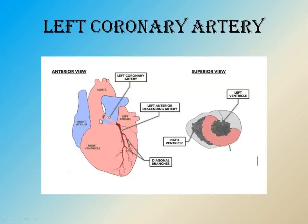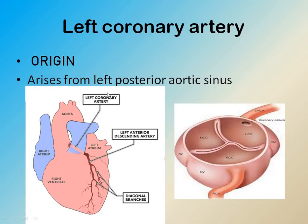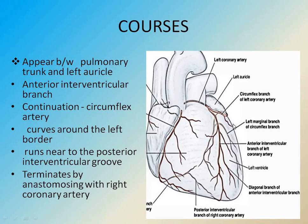The left coronary artery arises from the left posterior aortic sinus. The course of the left coronary artery: it appears between the pulmonary trunk and the left auricle, and it gives the anterior interventricular branch, which runs between the two ventricles — the right ventricle and the left ventricle.